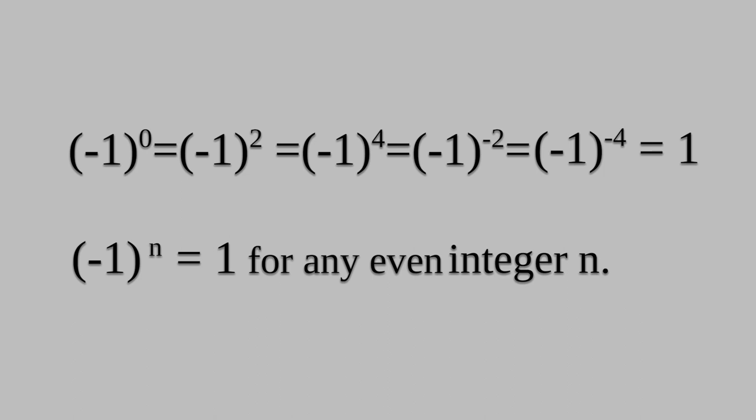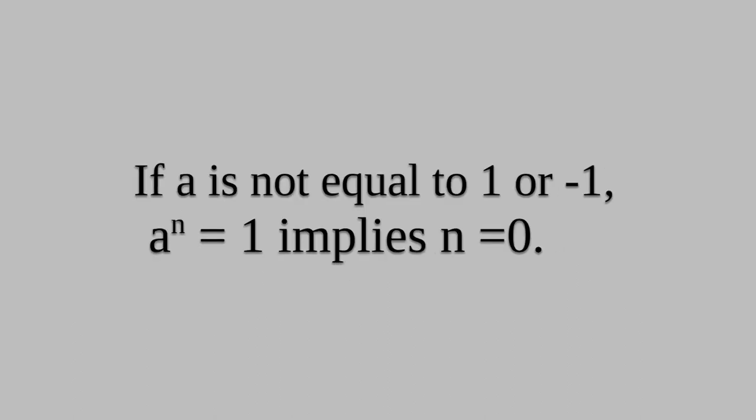Also note that minus 1 raised to 0, minus 1 square, minus 1 raised to 4, minus 1 whole raised to minus 2, and minus 1 raised to minus 4 are all equal to 1. Hence, minus 1 raised to n equals 1 for any even integer n. Note that if a is not equal to 1 or minus 1, then a raised to n equals 1 implies n equals 0.